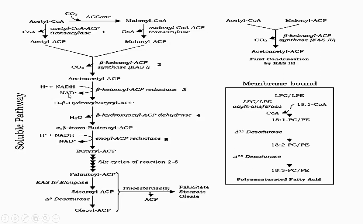The acetoacetyl-ACP is then reduced by NADH, producing NAD+, by the action of beta-ketoacyl-ACP reductase. This generates what we call beta-hydroxybutyryl-ACP.